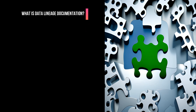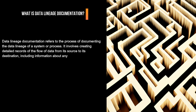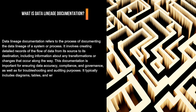What is Data Lineage Documentation? Data Lineage Documentation refers to the process of documenting the data lineage of a system or process. It involves creating detailed records of the flow of data from its source to its destination, including information about any transformations or changes that occur along the way. This documentation is important for ensuring data accuracy, compliance, and governance, as well as for troubleshooting and auditing purposes.